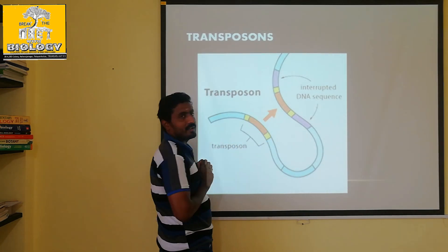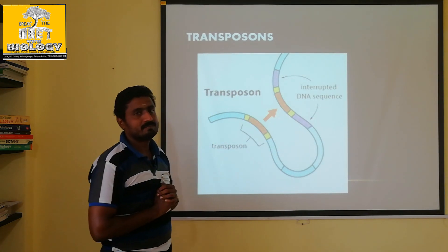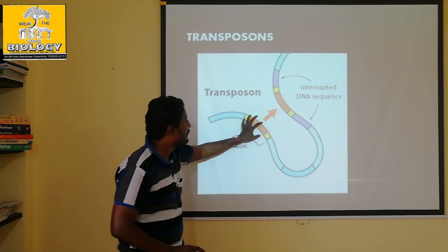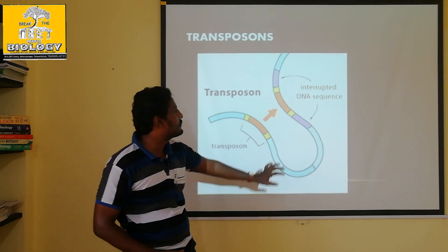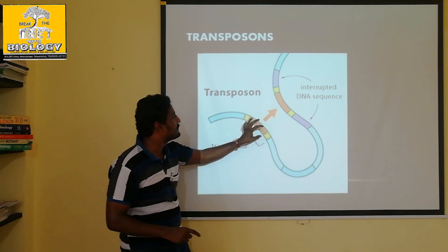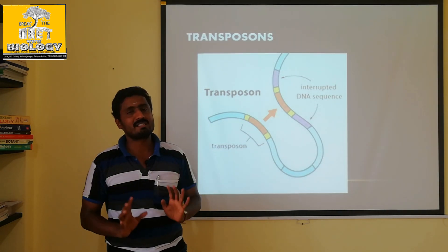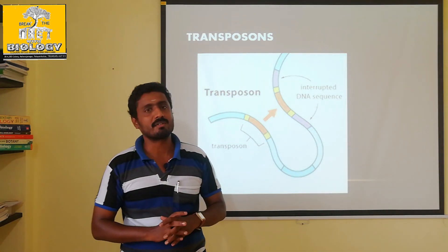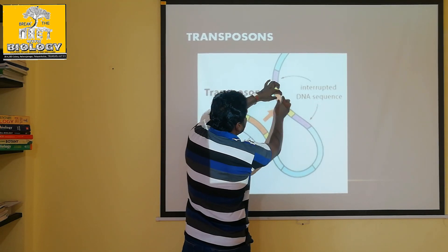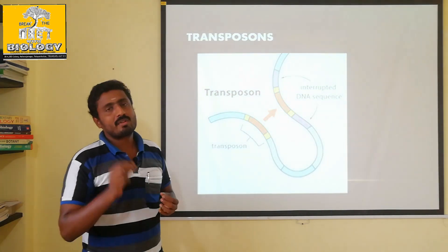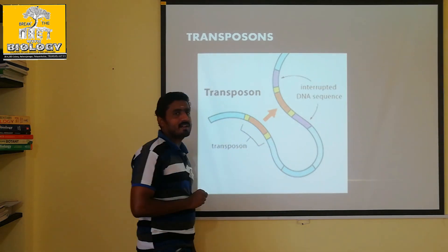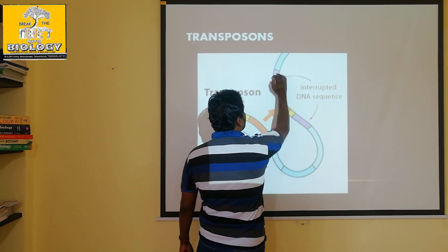This region is called the activator region and this region is called the dissociation region. The activator region contains the codons to control the character. The dissociation region is helpful for the breakage of the parental DNA segment and for the ligation of the transposon into the parental DNA segments.